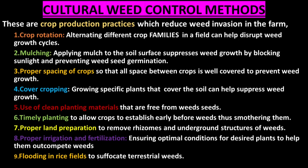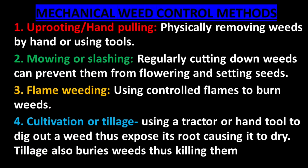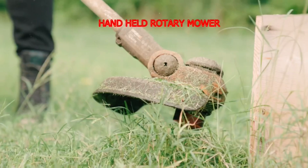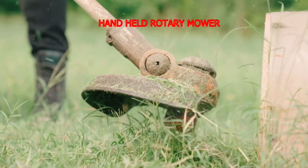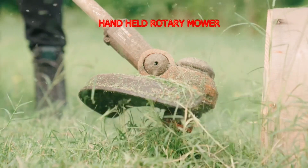Flooding in rice fields enables suffocation of terrestrial weeds. Mechanical weed control involves methods such as rooting or hand pulling, which involves physically removing weeds by hand or using tools such as the jembe. Mowing or slashing involves regularly cutting down weeds to prevent them from flowering and setting seeds.